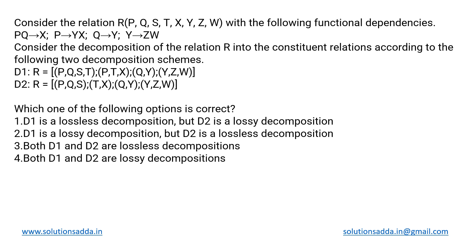This is a DBMS question based on functional dependencies and decomposition. We have a relation R with attributes P, Q, S, T, X, Y, Z, and W, along with a given set of functional dependencies. R is decomposed using two decomposition schemes D1 and D2, and we need to determine which of these yields a lossless or lossy decomposition.